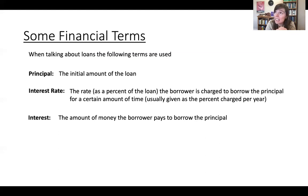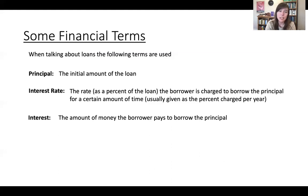Something that often gets confused in terms of terminology is the interest versus the interest rate. The interest rate is a percent, but the interest is an amount of money. In particular, it's the amount of money you pay to borrow the principal. So if you have a home loan and the mortgage rate is 2.5% annual rate, you'll have to pay 2.5% of that amount per year just to borrow that money.